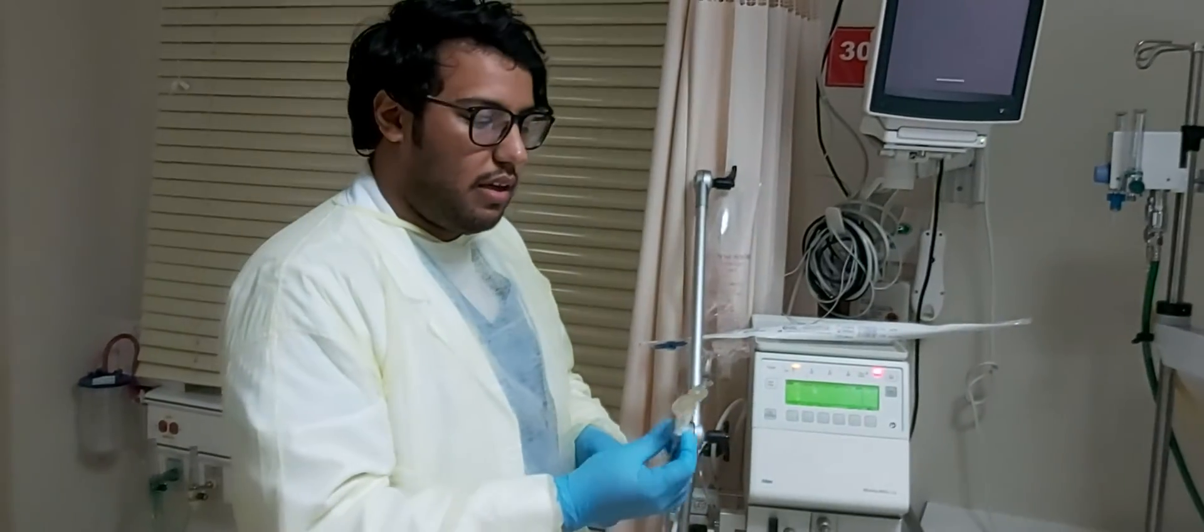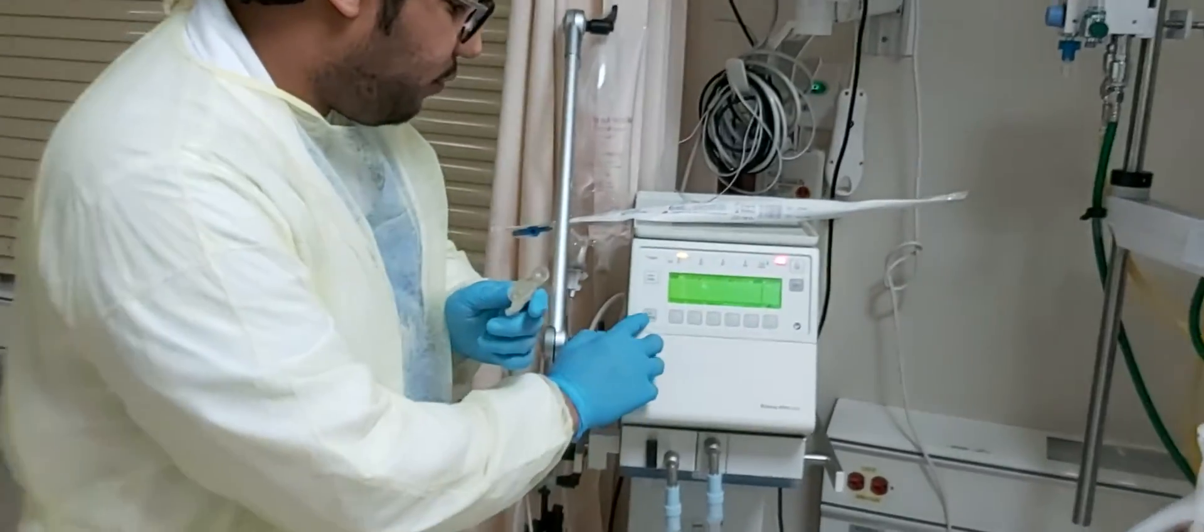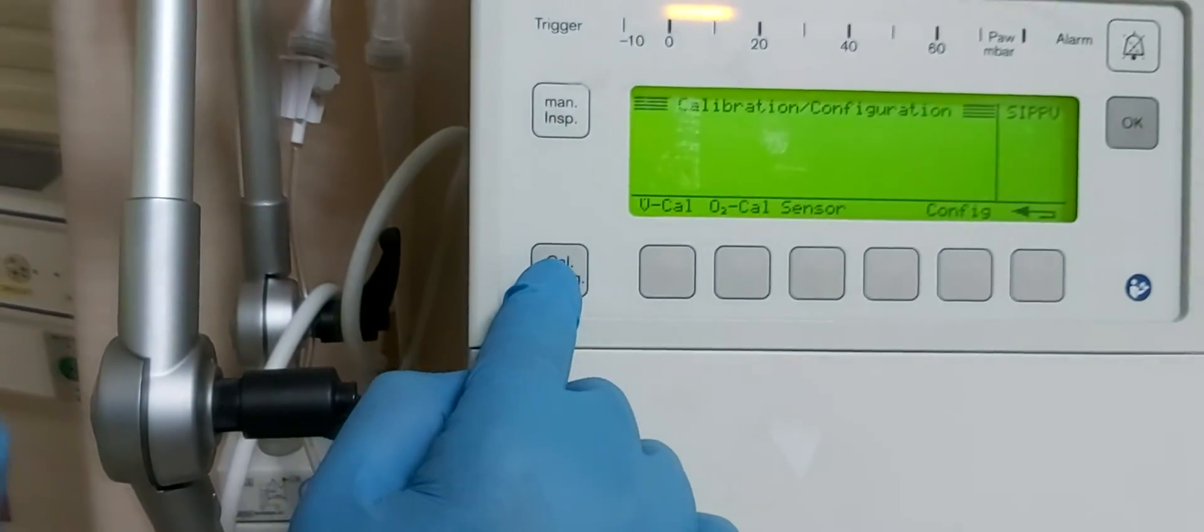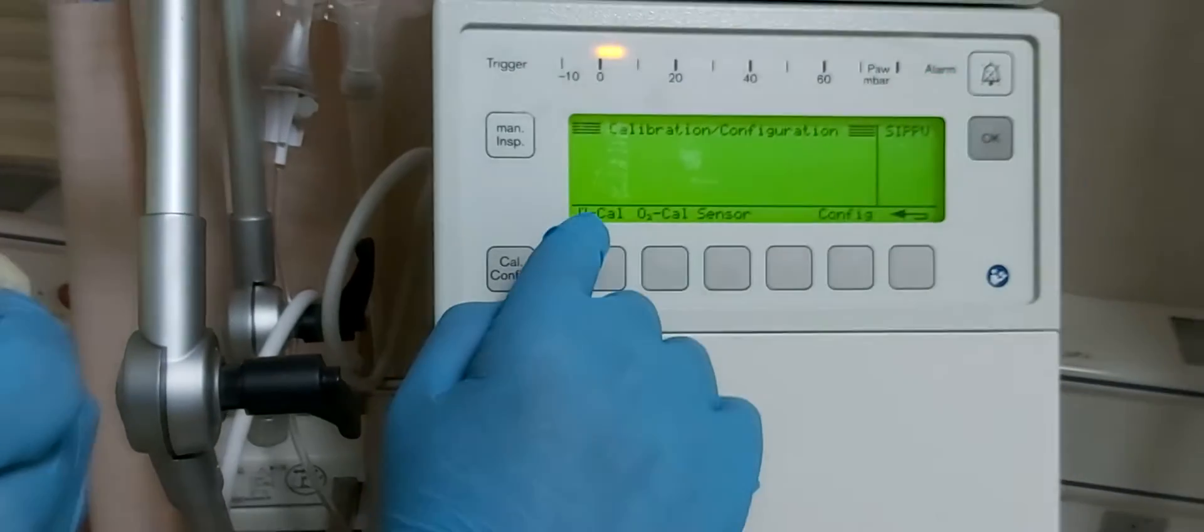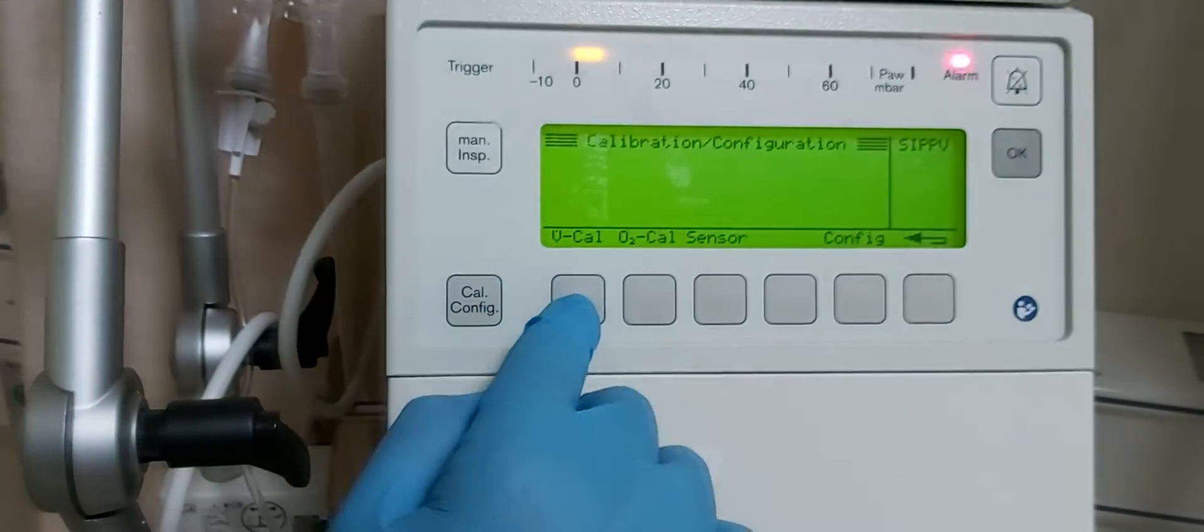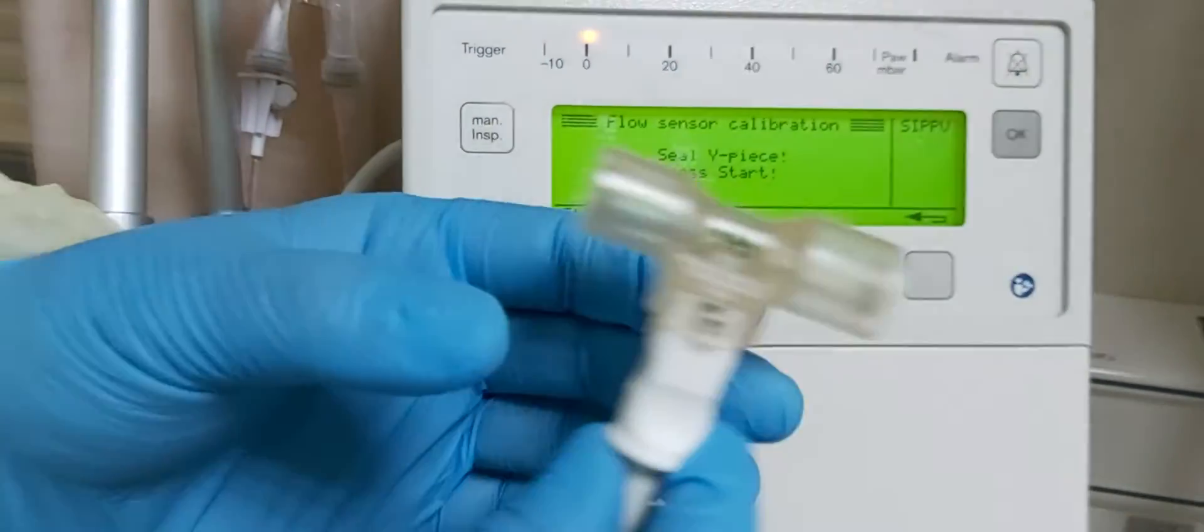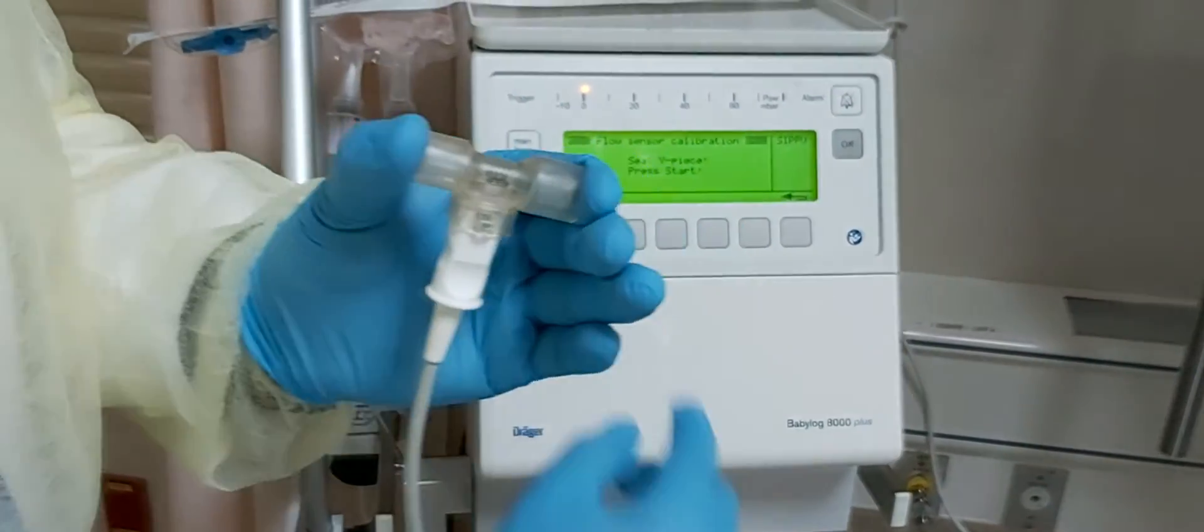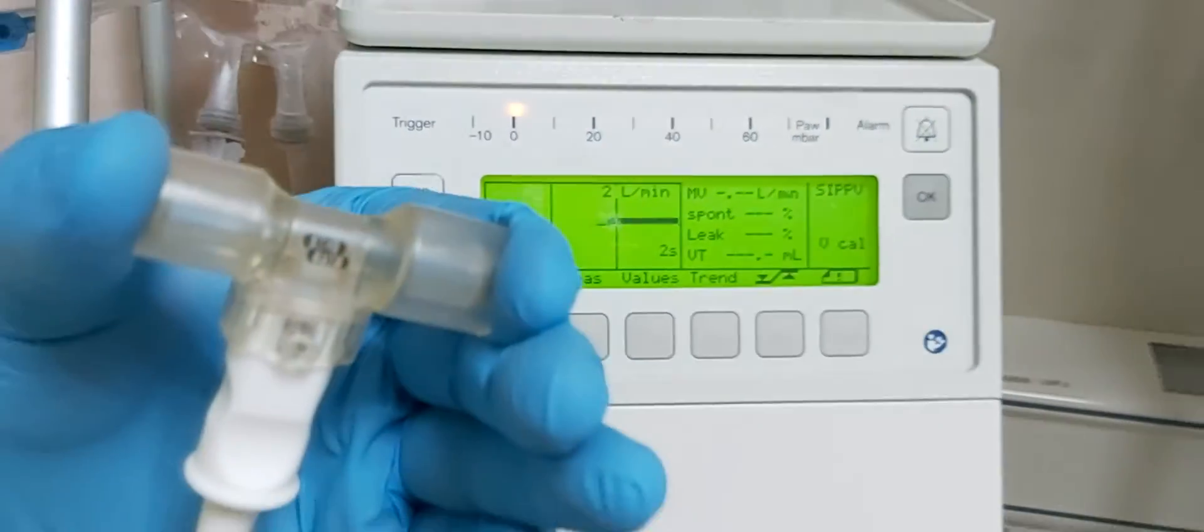How we can calibrate the flow sensor: we go from here, that button for calibration, and we press for flow sensor calibration. We have to close from both sides the flow sensor and press start.